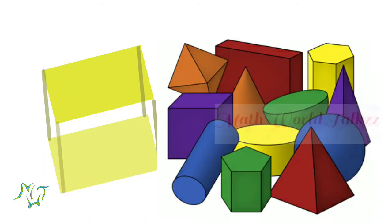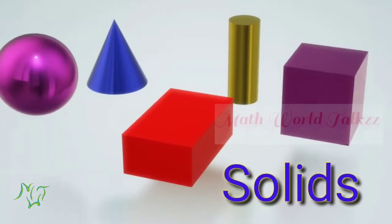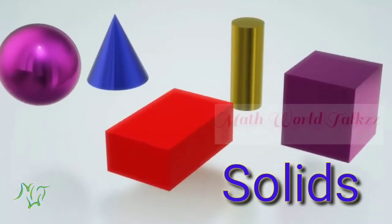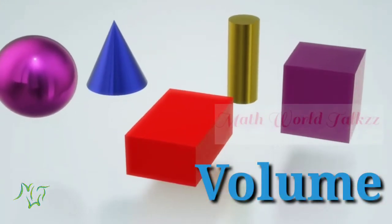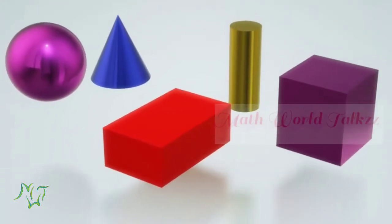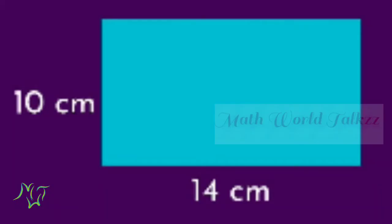You can see there is no thickness or height. The third dimension is missing. So if there is a third dimension for a figure, those figures are called three-dimensional figures or solids. Area tells the size of the two-dimensional figures or plane figures.